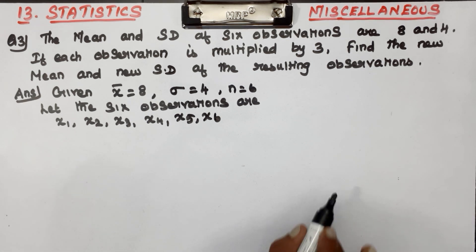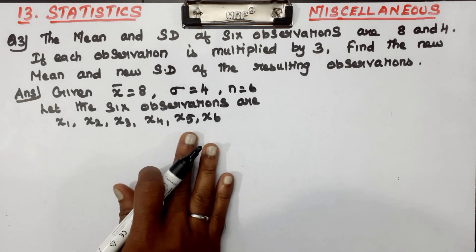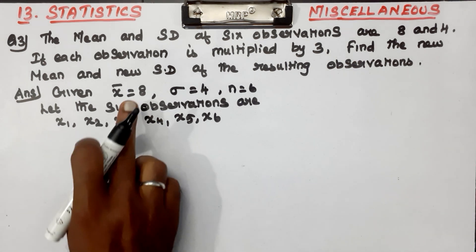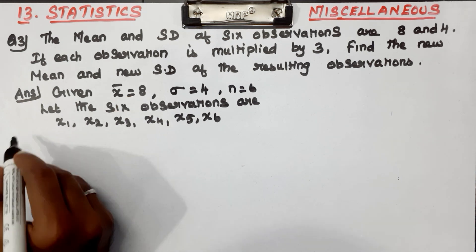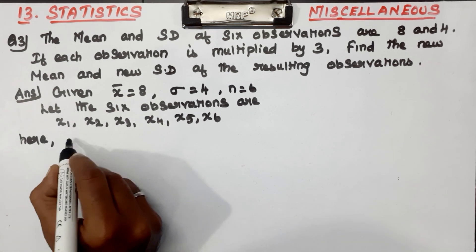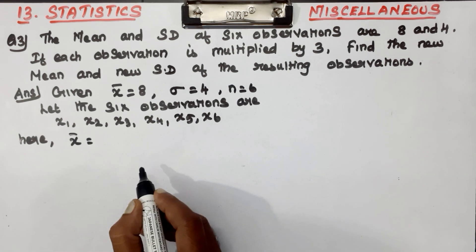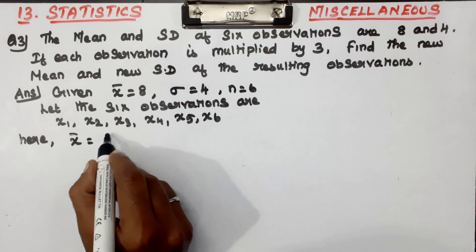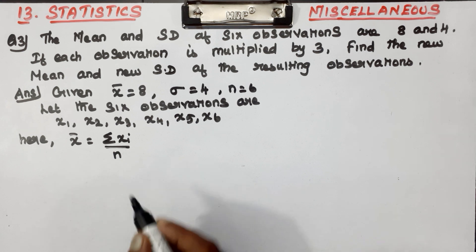First step: the mean x-bar equals the summation of xi divided by n. So x-bar equals the sum x1 plus x2 plus x3 plus x4 plus x5 plus x6, divided by n.